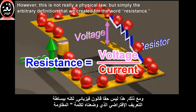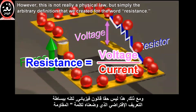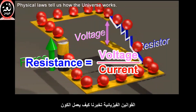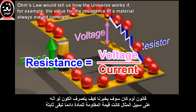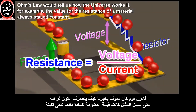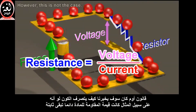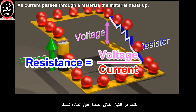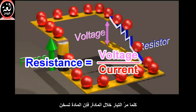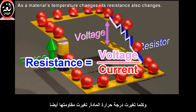However, this is not really a physical law, but simply the arbitrary definition that we created for the word resistance. Physical laws tell us how the universe works. Ohm's law would tell us how the universe works if, for example, the value for the resistance of a material always stayed constant. However, this is not the case. As current passes through a material, the material heats up. As a material's temperature changes, its resistance also changes.